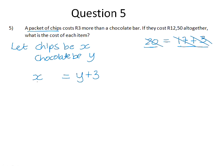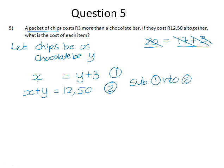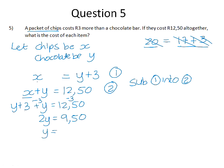We also know that together they cost 12 rand 50. So we have a set of simultaneous equations here. We can substitute from equation 1 into equation 2 because equation 1 already gives us the value of X. So instead of X, we have Y plus 3 plus Y is equal to 12 rand 50. That gives us 2Y is equal to 12 rand 50 minus 3, because we would minus 3 from both sides, gives us 9 rand 50. And if we divide both sides by 2, we get 4 rand 75.